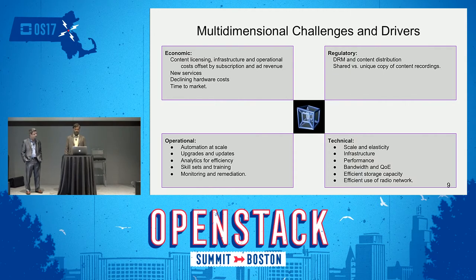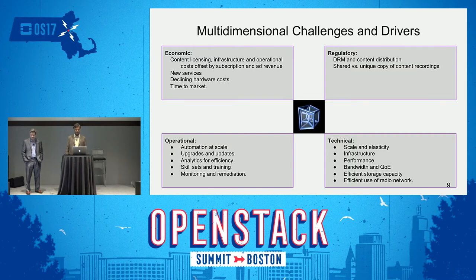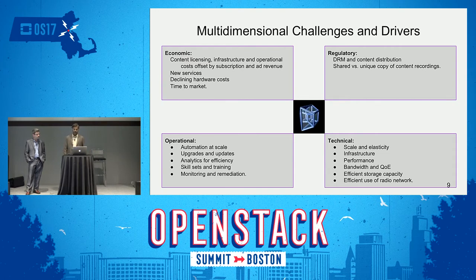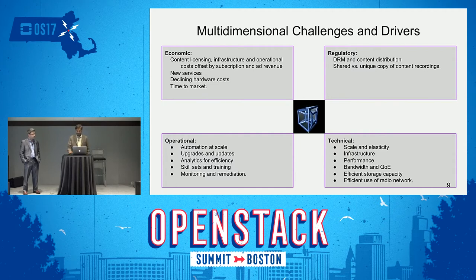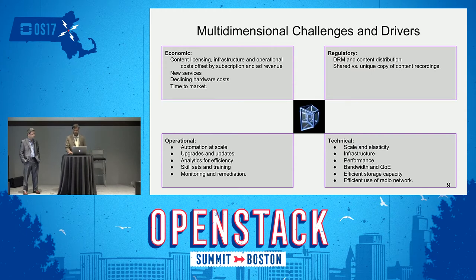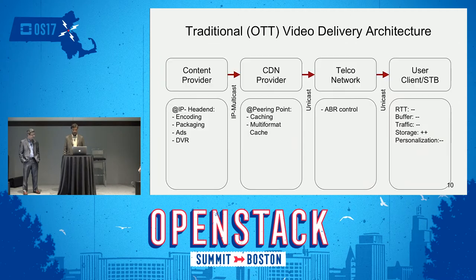From an operational and technical perspective, when you deliver at scale you need a high degree of automation. Gone are the days of managing each asset with dedicated people. You need to collect analytics from the infrastructure to make it more efficient, evolve skill sets, monitor and remediate problems rapidly. Technically: scale, elasticity, performance, bandwidth, quality of experience, storage capacity, and efficient use of the radio network at the edge are all critical.